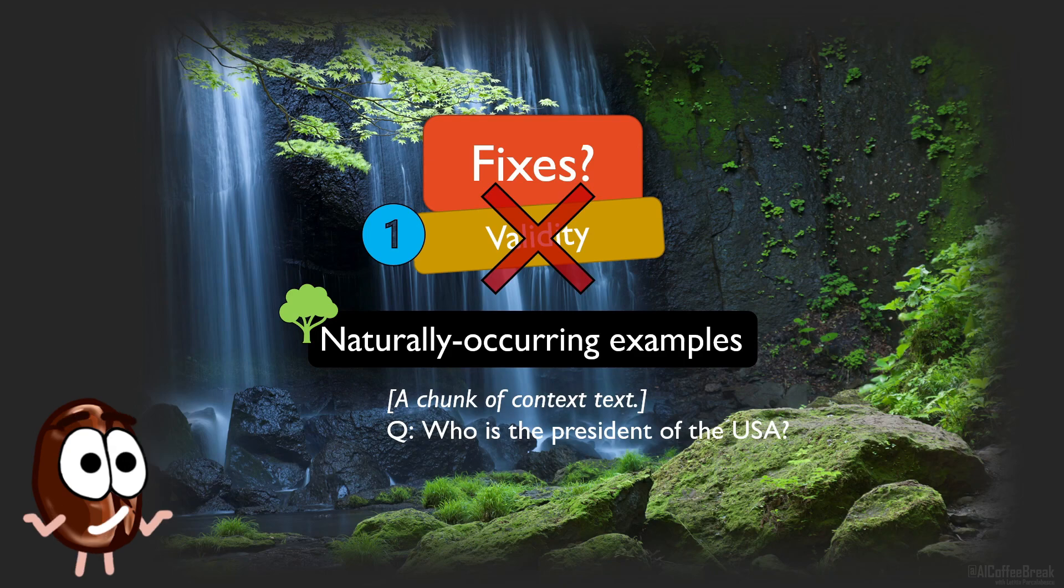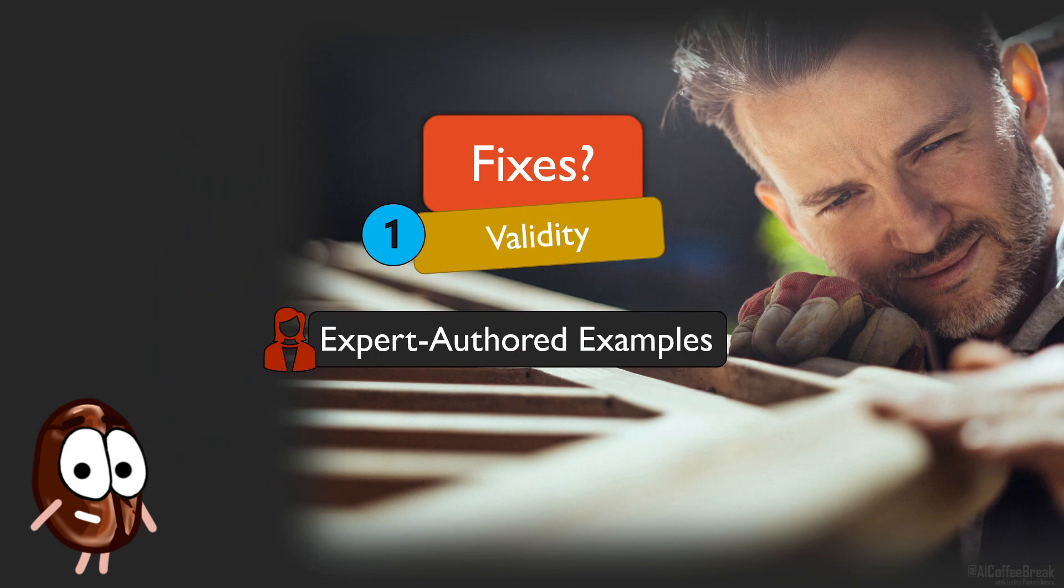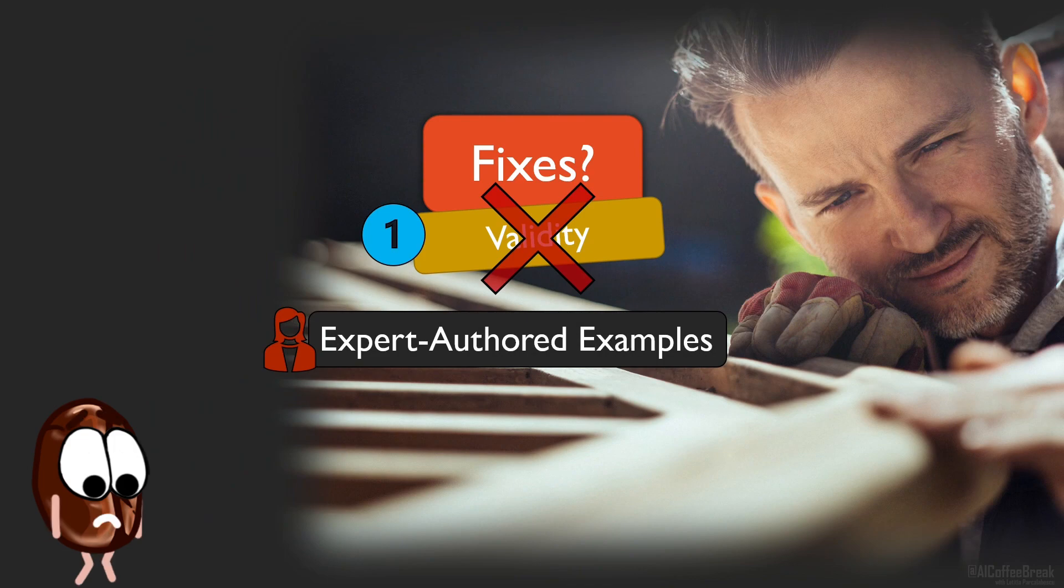Just imagine a reading comprehension task where the model must extract who the President of the United States is from a text. Well, it does not need to, if it has memorized this fact. Okay, Miss Coffee Bean, but surely examples generated by experts should do the trick, right? No. What do you mean no? Well, expert-authored examples have problems, too. They are expensive, that's sure, but experts are human too and will introduce their own selection bias of phenomena they are studying, for example. So expert annotation does not guarantee broad testing coverage for model abilities either.